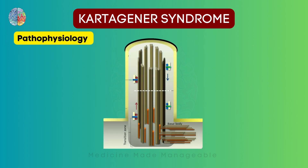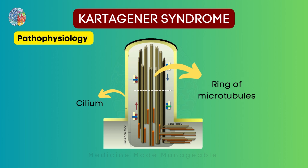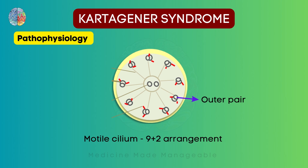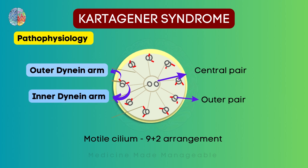Now let's understand the pathophysiology behind this disease — it's pretty interesting. So here we have one of the cilia, called a cilium, and inside this cilium we have a ring of microtubules which is responsible for the movement of the cilia. Taking a cross section and looking at the tubules from the top, they are arranged in a 9 plus 2 arrangement, meaning there are 9 outer pairs and 1 central pair. The important component to remember for this disease is dynein — we have an outer dynein arm and an inner dynein arm, and a defect in both of these can lead to this disease.